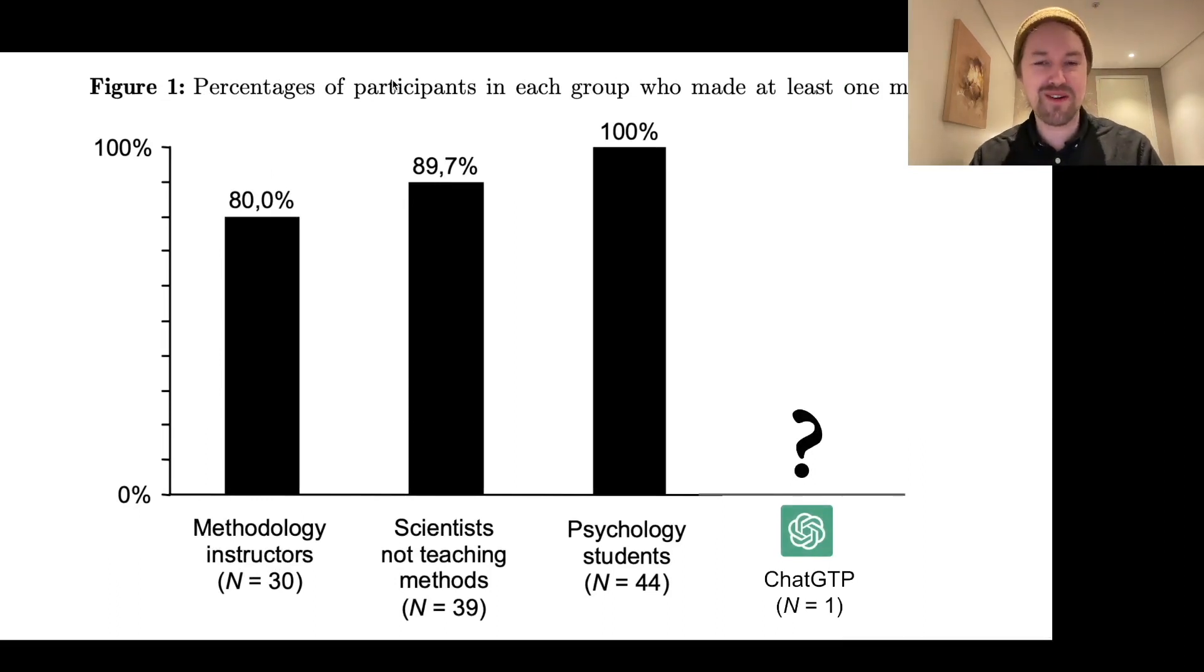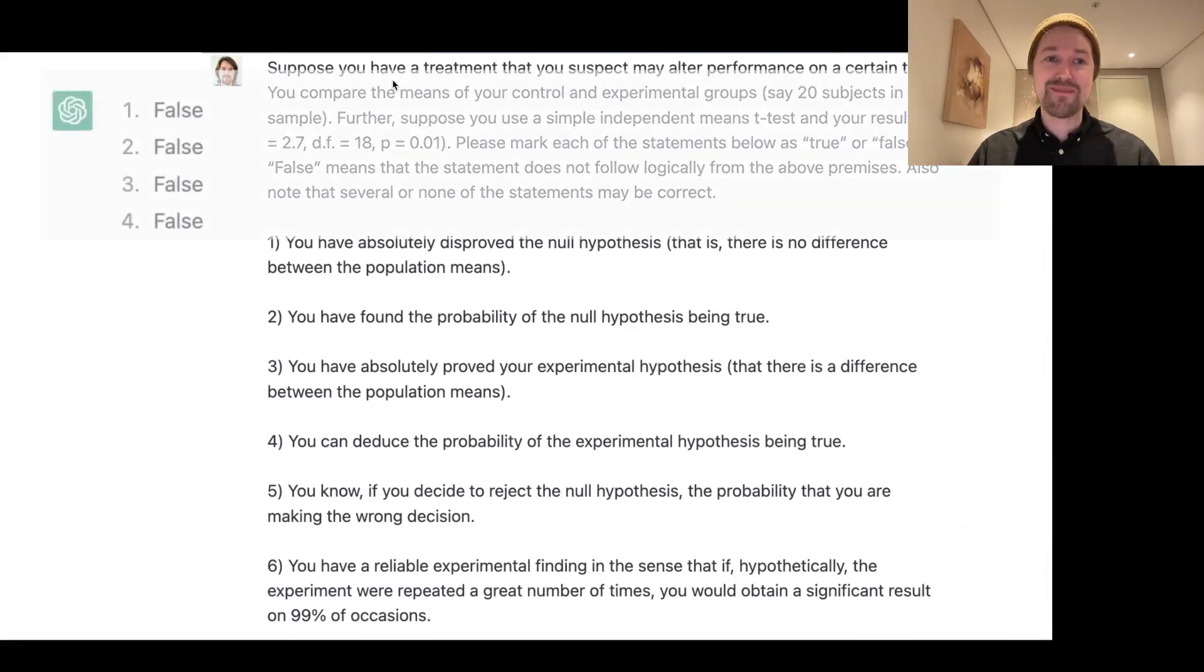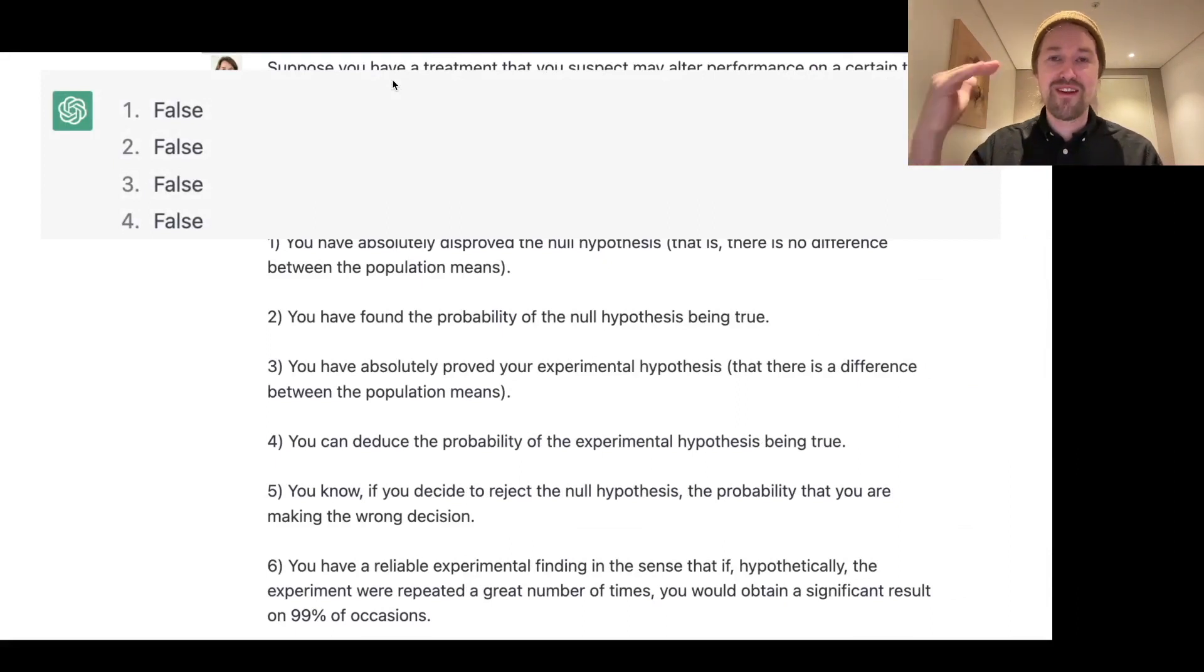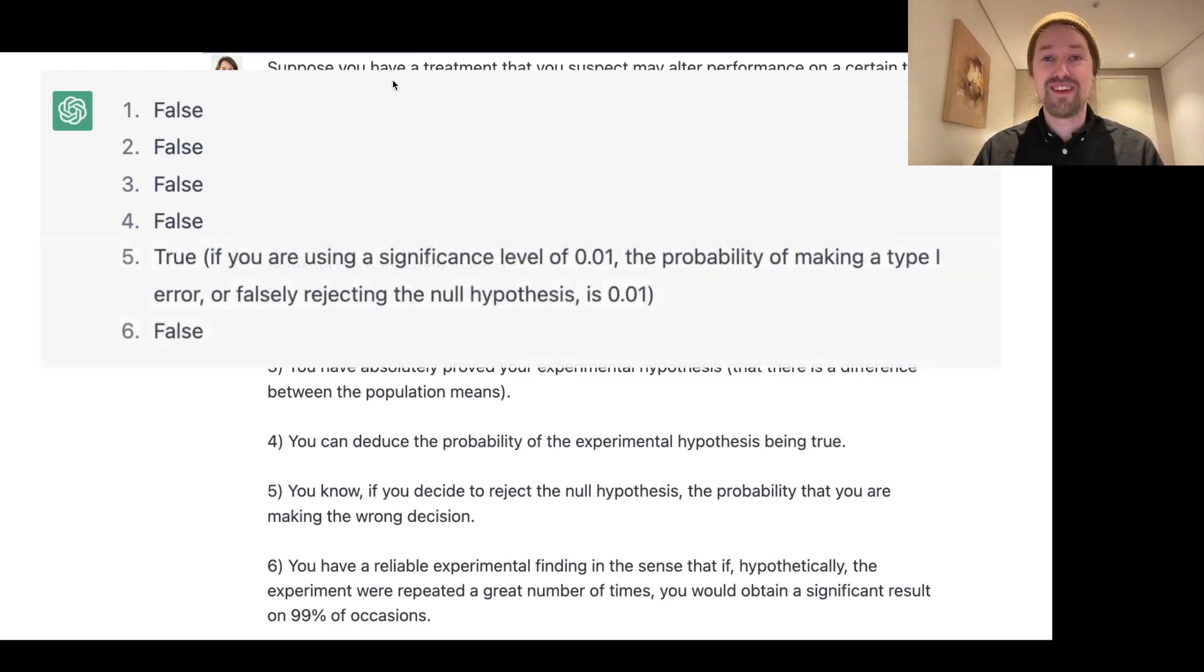And of course, I started with the questionnaire from Haller and Krauss. So I gave it the whole questionnaire. And initially, I was very impressed. On the first four statements, ChatGPT answered false. But then, on statement five, you know if you decide to reject the null hypothesis, the probability that you are making the wrong decision, ChatGPT answered true. And confidently gave the following rationalization.